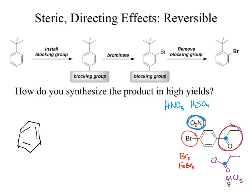So the nitro, if we put that on first, will direct to the meta positions. As a meta director, that's not going to work for us. Our purple group, our acyl group, is meta to the nitro, but the bromine is not. So if I put on the nitro first, I'm now shut down — I wouldn't be able to get the bromine on in the right position.